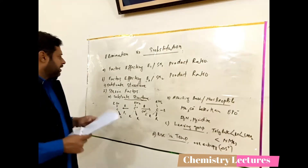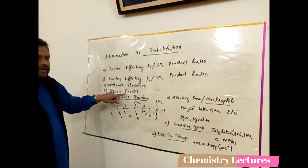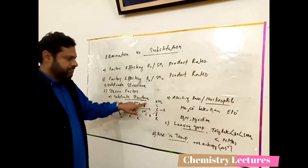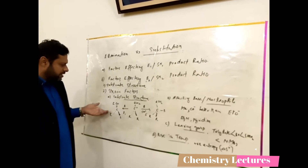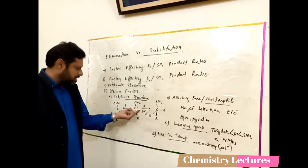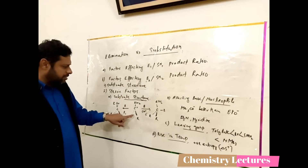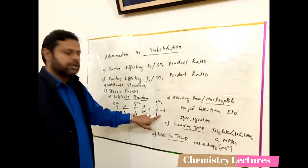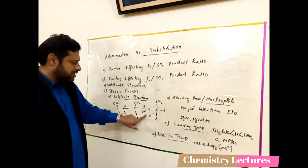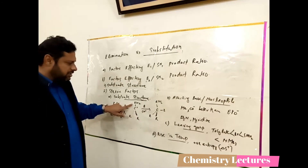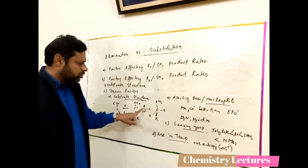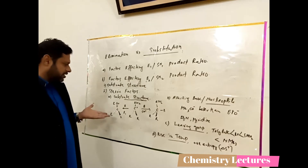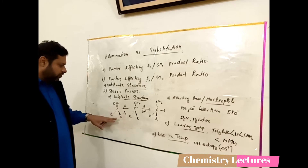Now we discuss the second type of factors: steric factors affecting elimination versus substitution. In steric factors, substrate structure is again relevant. When elimination occurs, the sp3 hybridized carbon is converted to sp2. In substitution, the sp2 carbon is converted to sp3, meaning four groups must attach — this creates steric repulsion. In elimination, the number of groups on that carbon decreases, so steric factors favor elimination.